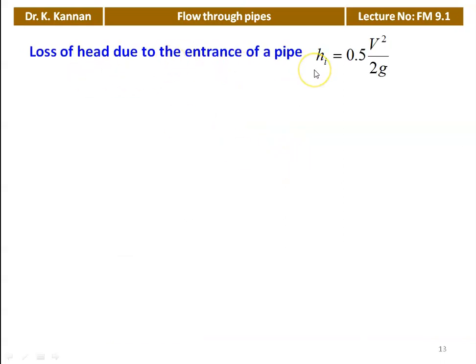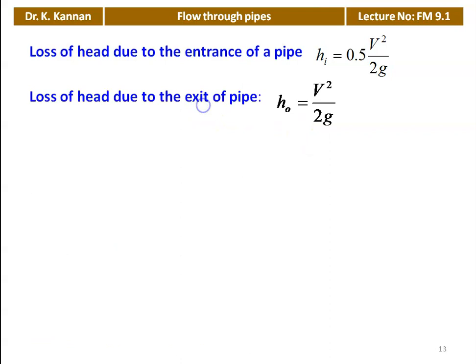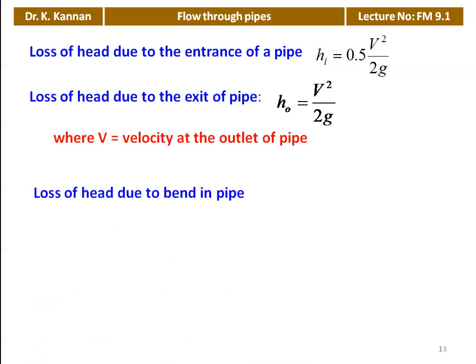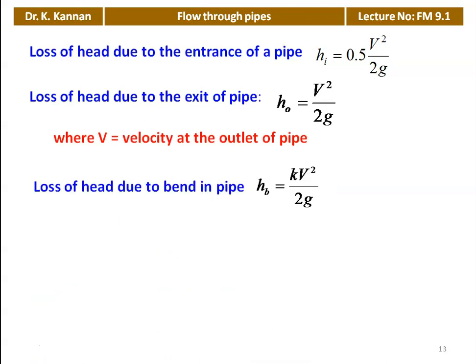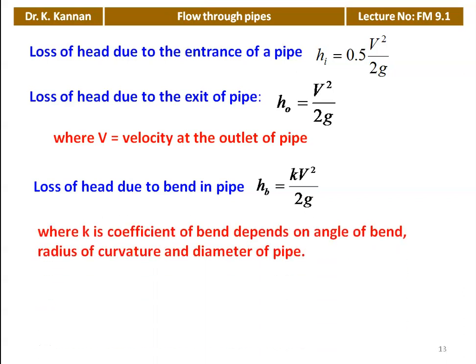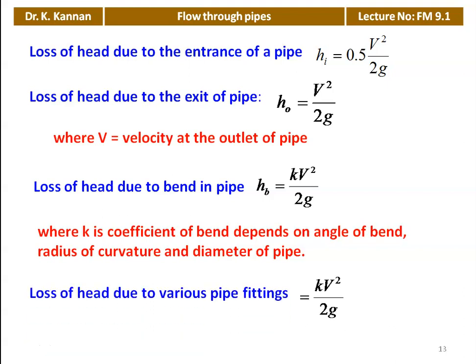Loss of head at the entrance of the pipe: HI = 0.5·V²/2g. Loss of head at the exit of the pipe: HO = V²/2g, where V is the velocity of the outlet pipe. Loss of head due to a bend in the pipe: HB = K·V²/2g, where K is the coefficient of bend, depending on the angle of the bend, radius of curvature, and diameter of the pipeline — the K value will be given in the problem. Loss of head due to various pipe fittings: K·V²/2g, where K is the coefficient of pipe fitting.